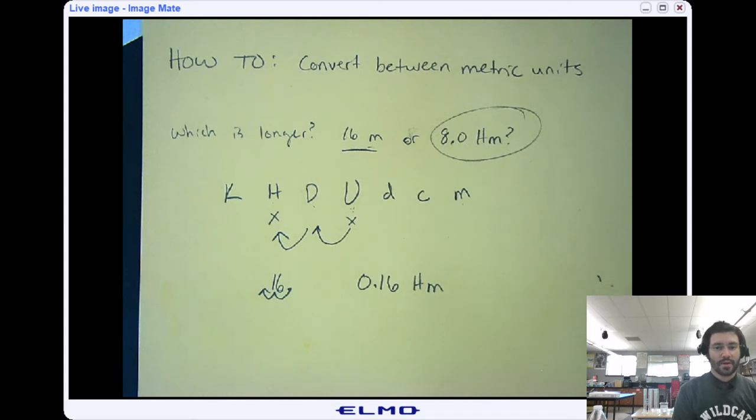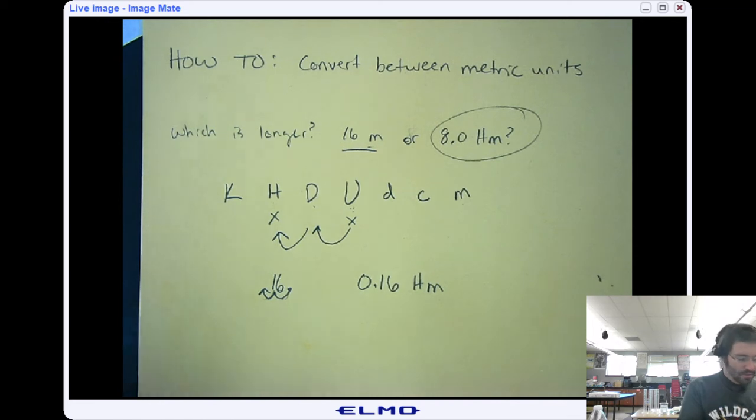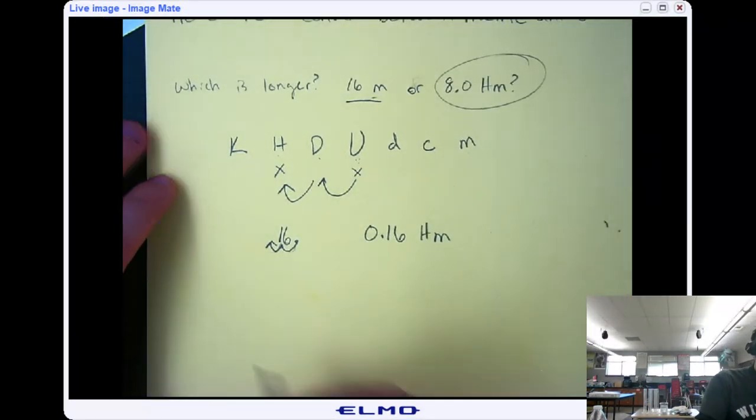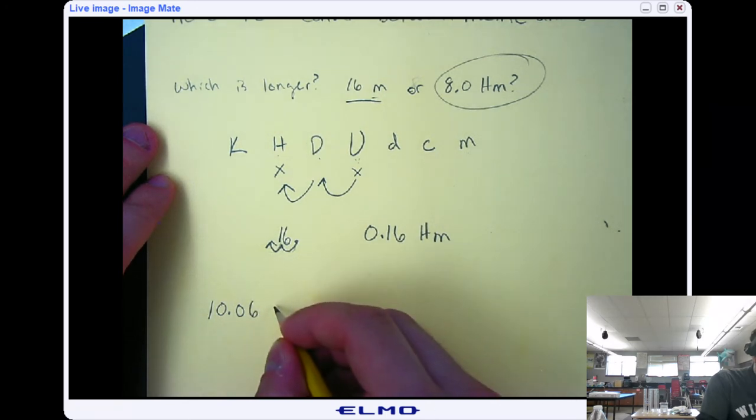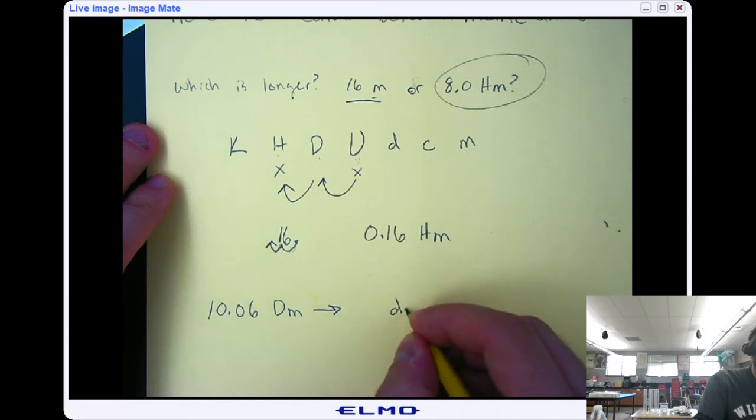Okay, so that was a quick example. Let's look at one that's maybe a little more challenging, and you'll notice that we work our way around the numbers that are there first before we add any zeros. So let's go ahead and see one that goes in the other direction. So let's say that we had a value of 10.06 decameters, and we need to convert that to decimeters.